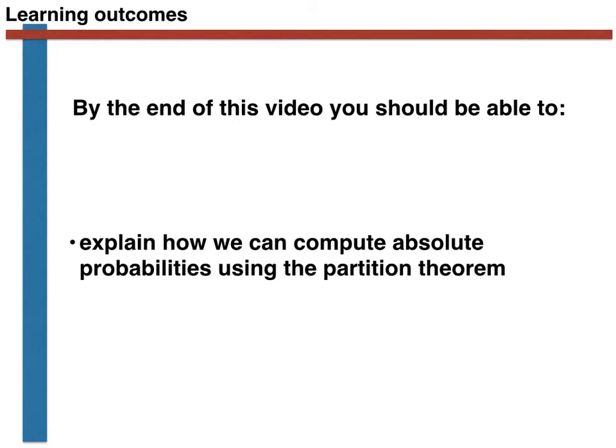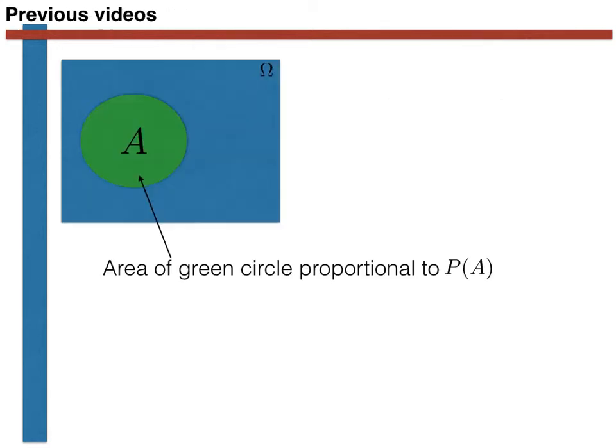We have then discussed how we can represent probabilities using Venn diagrams. In the example shown here, the green circle represents the set of outcomes from the experiments that satisfy the logical criteria A. The blue square represents the sample space. And the green circle has an area proportional to the probability that the outcome of the experiment is A.